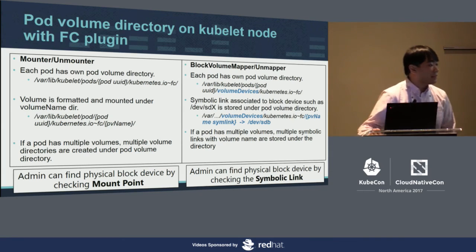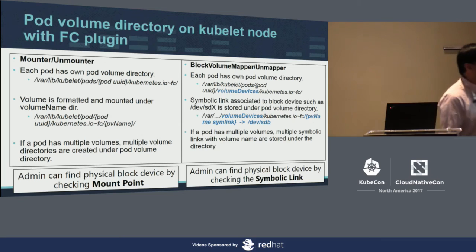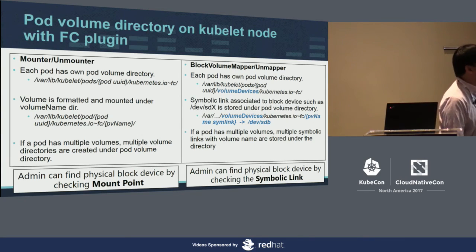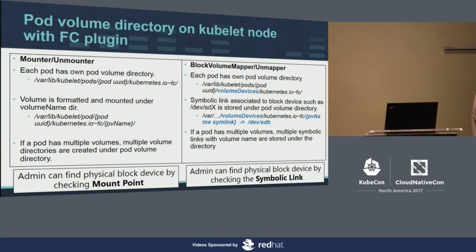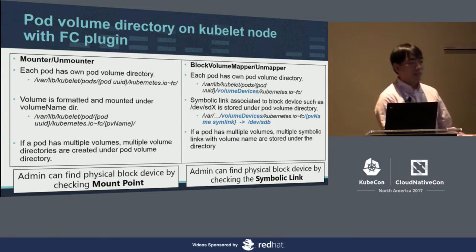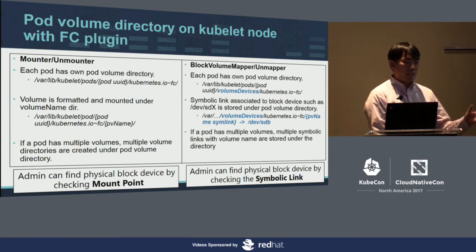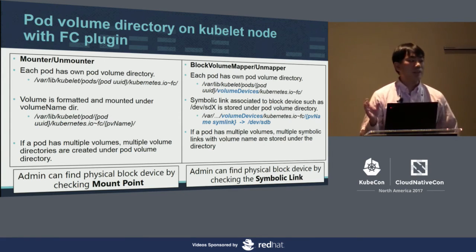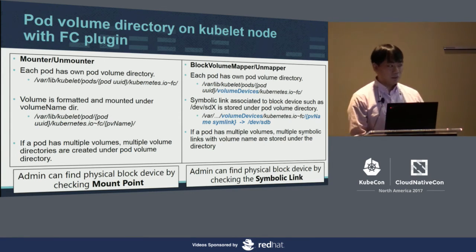Question from the audience: Is the destination of that symbolic link the actual block device on the host system? Yes — the PV name symbolic link points to the block device — such as /dev/sdx — on the kubelet node, so admins can find the pod disk and the physical disk on the kubelet node for troubleshooting.